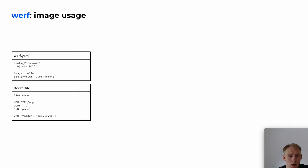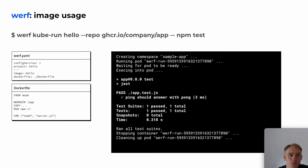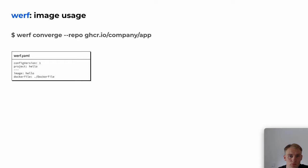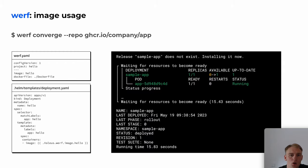We define the image in werf.yaml, and then run the werf kube run command. We use the image name from werf.yaml and the command we want to run on the image. As a result, Werf runs the command in the appropriate image in Kubernetes. For another example — deploying our application to Kubernetes — in addition to the previous configuration, a Helm chart is added. In templates, instead of an image tag, we use a special Helm value which Werf passes at runtime. After calling the werf converge command, the application is deployed to Kubernetes.